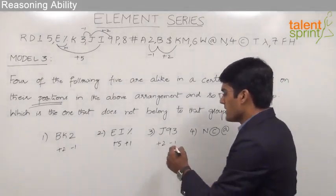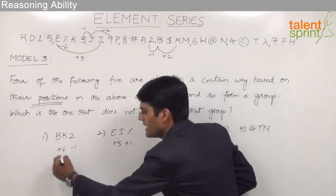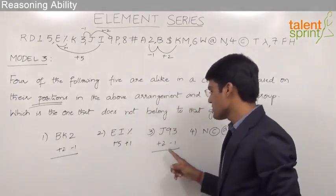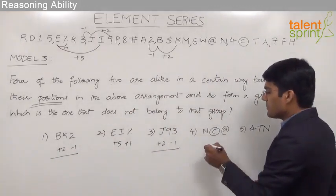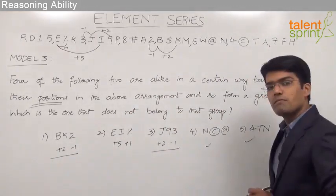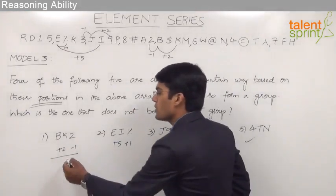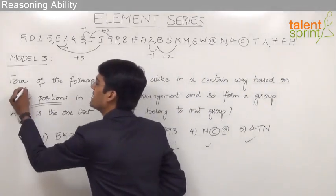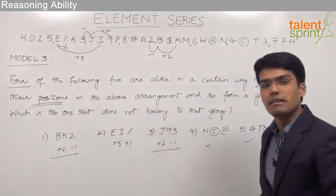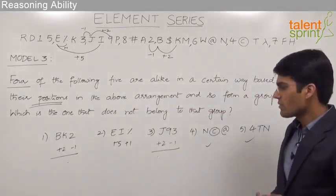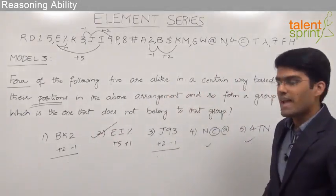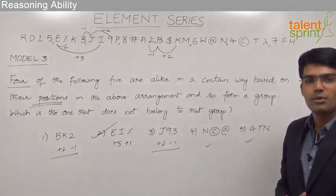So as we can observe the positioning in option 3 and option 1 is same that is plus 2 minus 1, and it is obvious that the positioning in option 4 and option 5 should match option 1 and option 3 as the question clearly says that there are 4 triplets which are similar. So very clearly we can say that the second option is the answer as it is different when compared to the remaining 4.